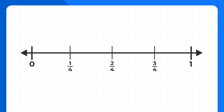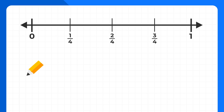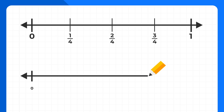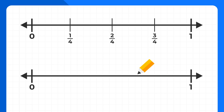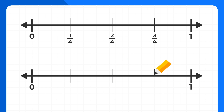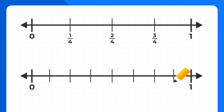Now below this, let's draw a number line showing eighths. We'll split the number line in half, then into fourths, and finally we'll split up each piece again to make eighths.